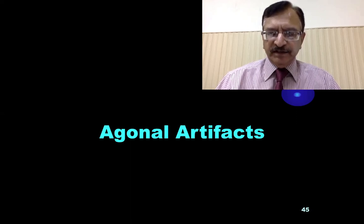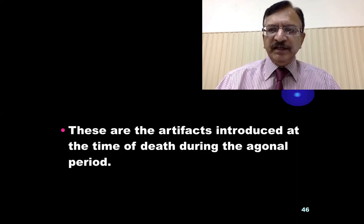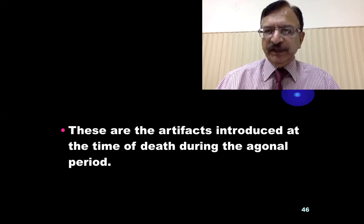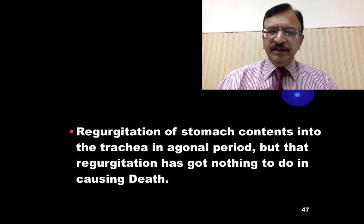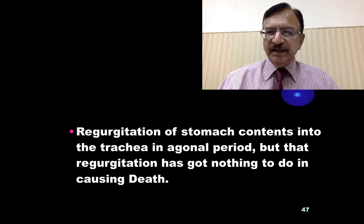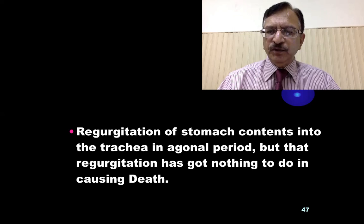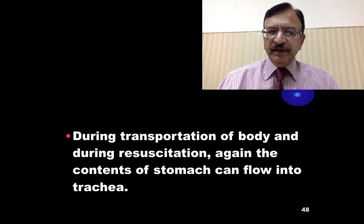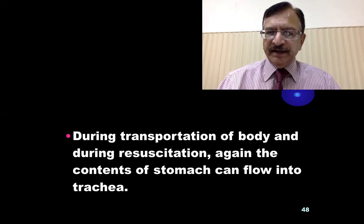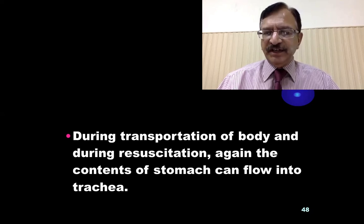The first is the agonal artifact. These are the artifacts which are introduced at the time of death during the agonal period. For example, the regurgitation of stomach contents into the trachea in the agonal period, where that regurgitation has nothing to do with the cause of death. During transportation of the body and during resuscitation, the contents of the stomach can also flow into the trachea.